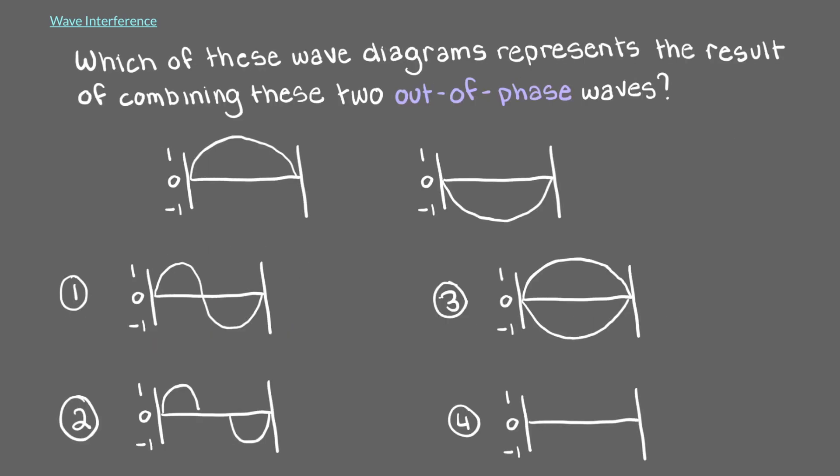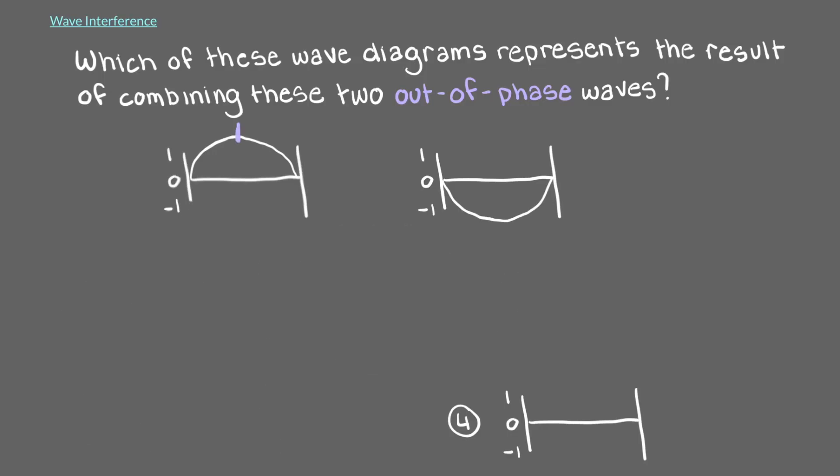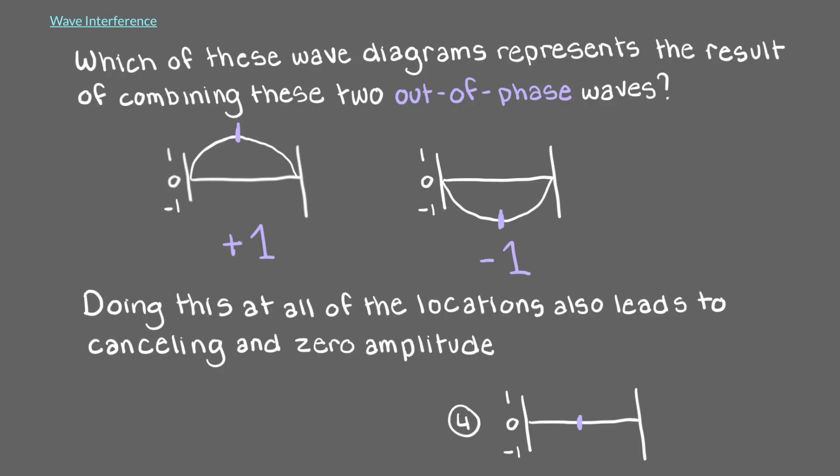Now, which of these wave diagrams represents the result of the combining of these two out-of-phase waves? Since this location on the first wave has an amplitude of plus 1 and the second wave has an amplitude of minus 1 at that location, they sum to 0. Doing this at all of the locations also leads to cancelling and zero amplitude.